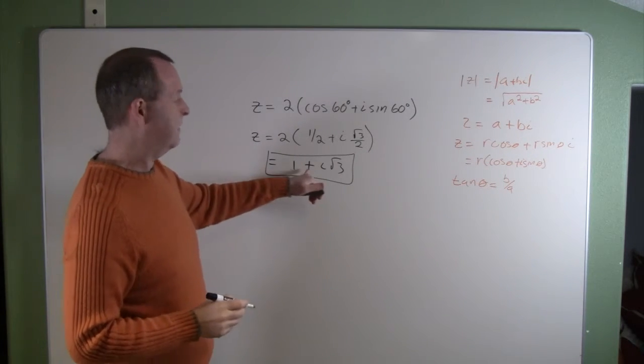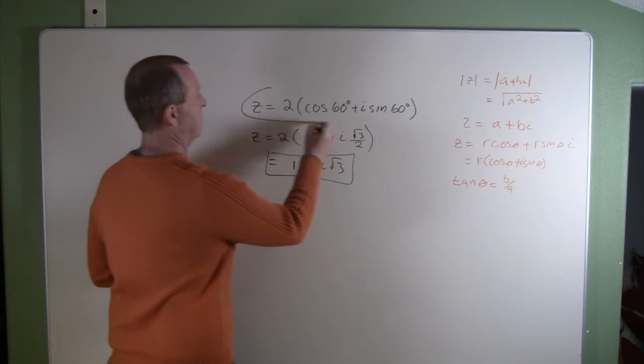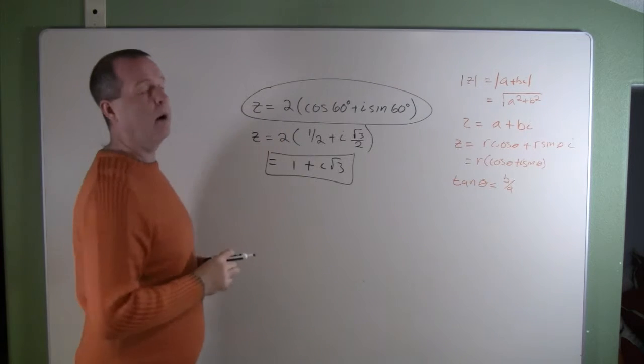So there I have the complex number written in rectangular form, where I started with a complex number that was written in polar form.